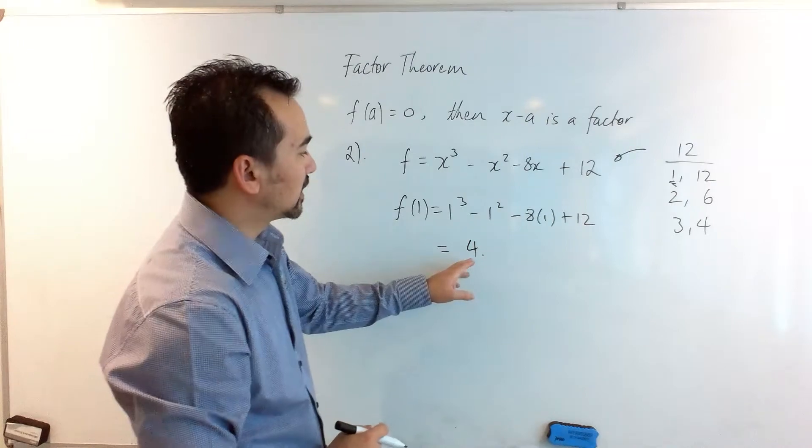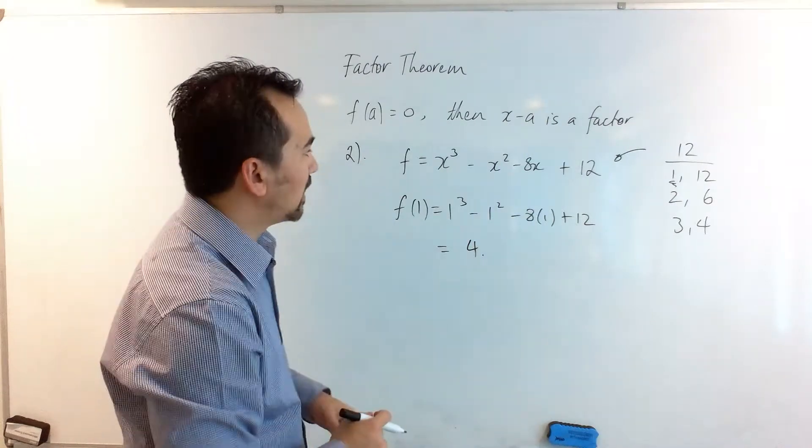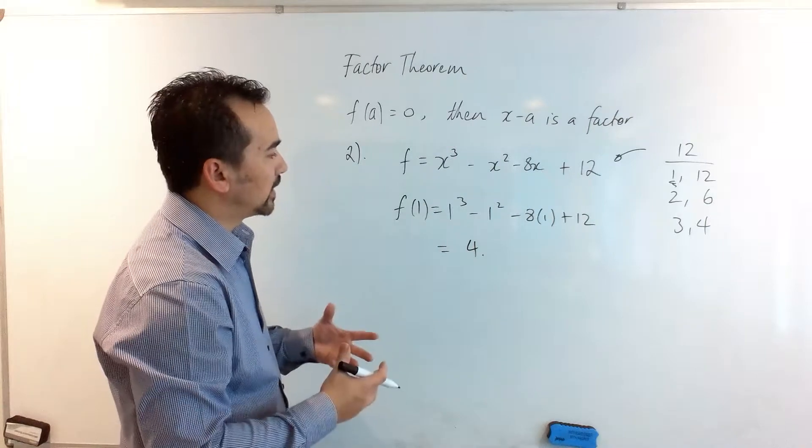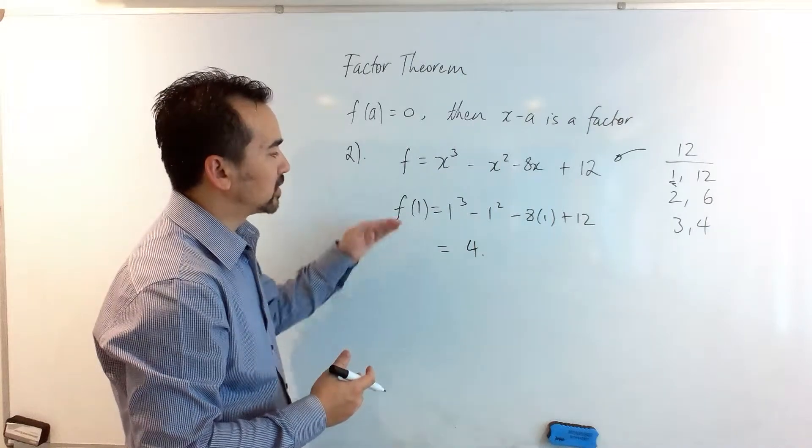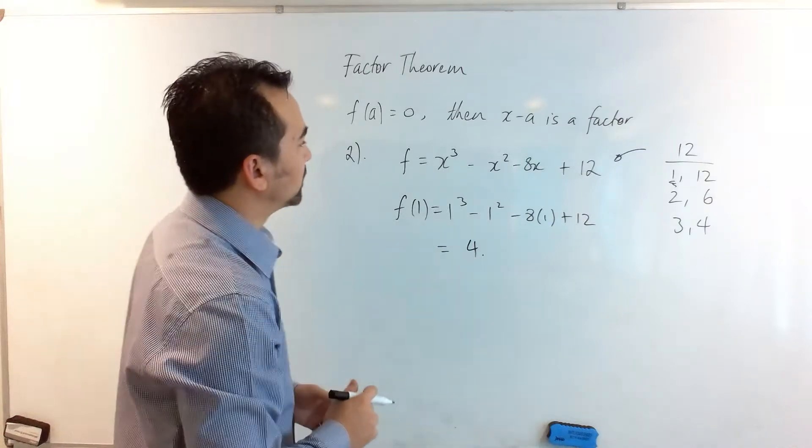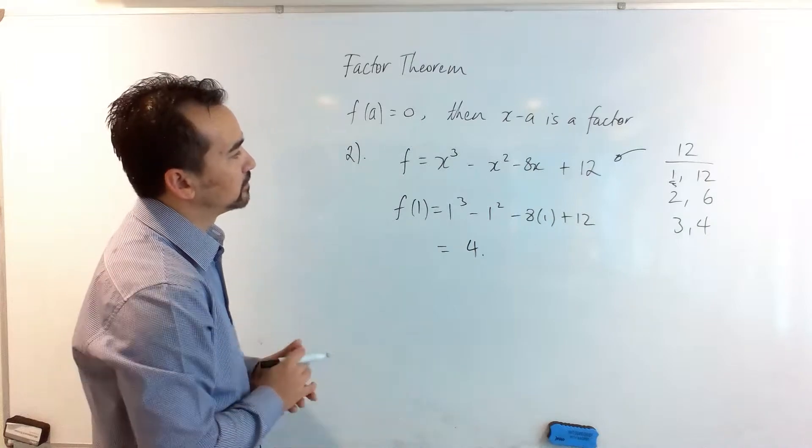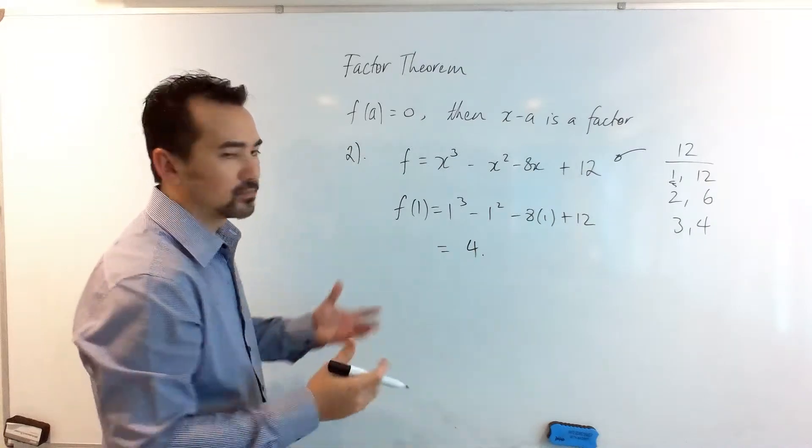So it seems like my answer was a little overly positive. I want to find a way to make my answer closer to 0 by increasing the negativity of this value, so I could try a negative term. Let's try negative 1.